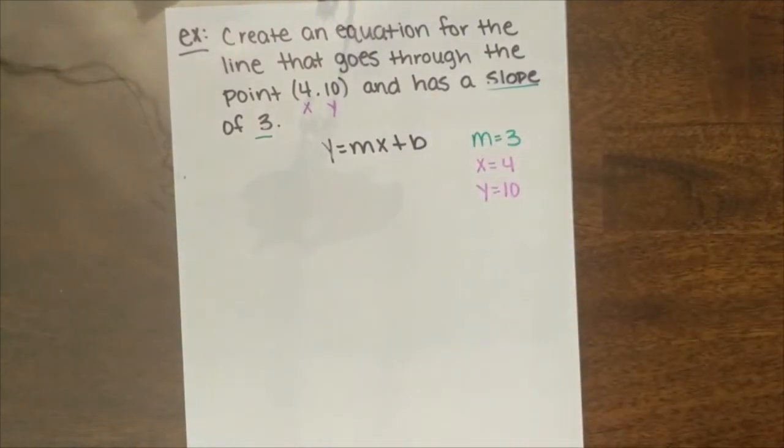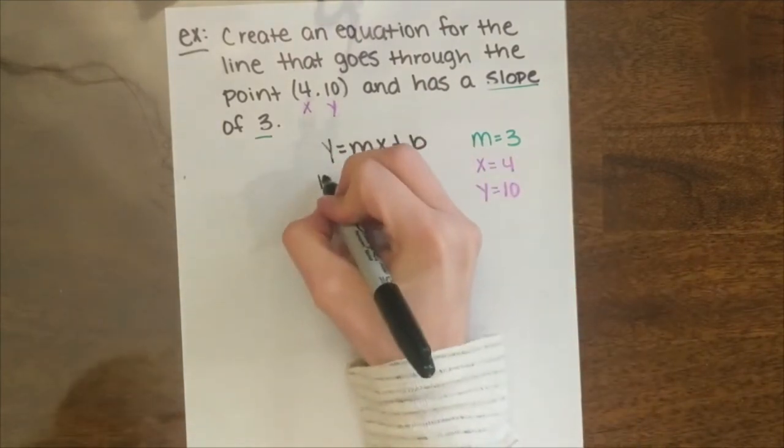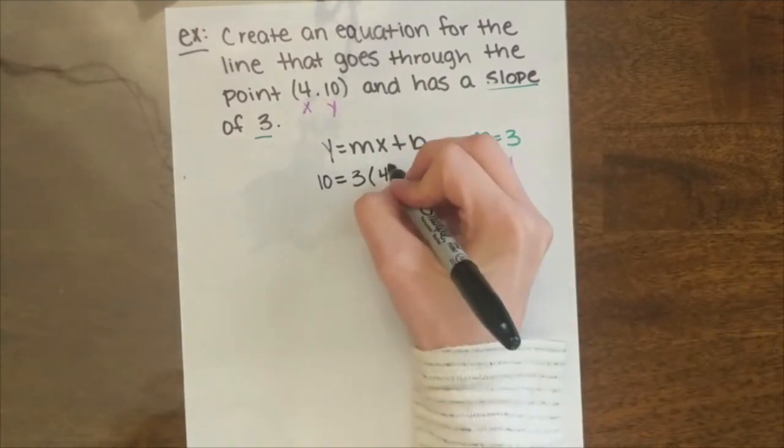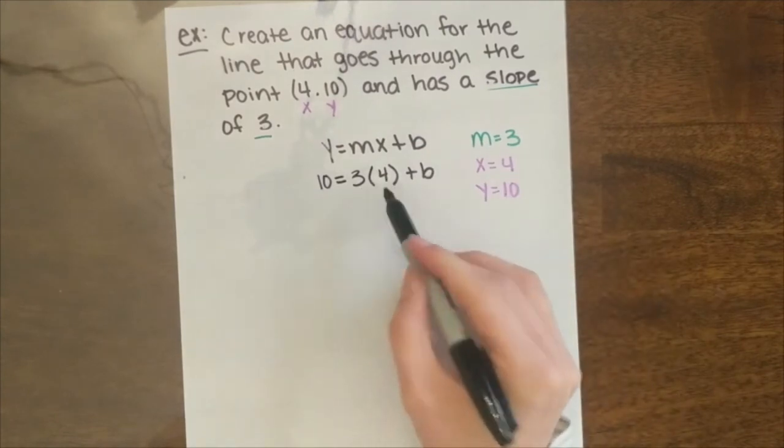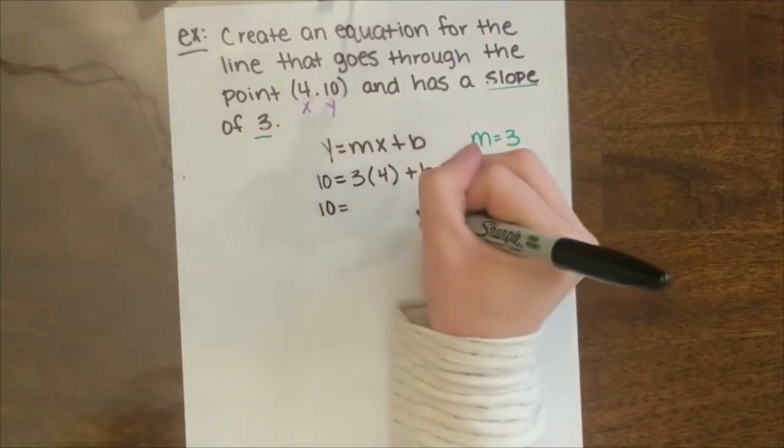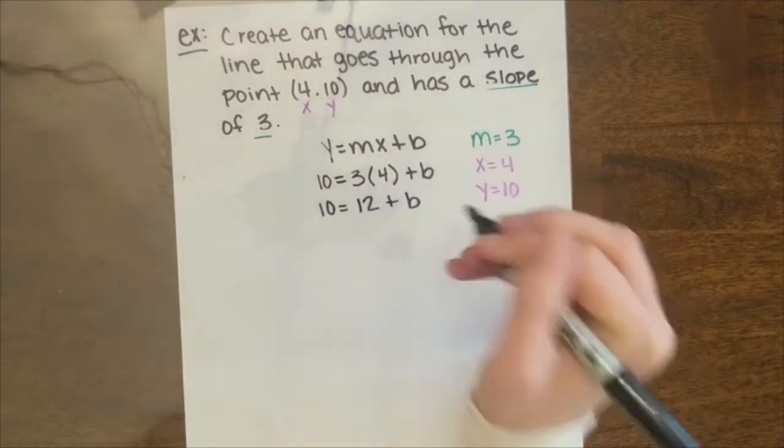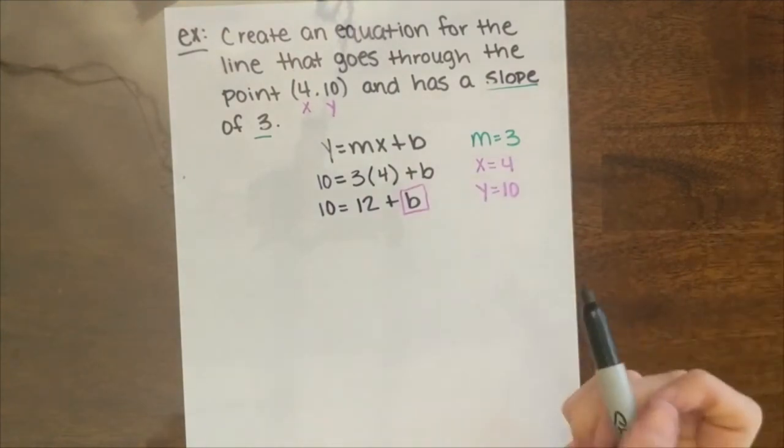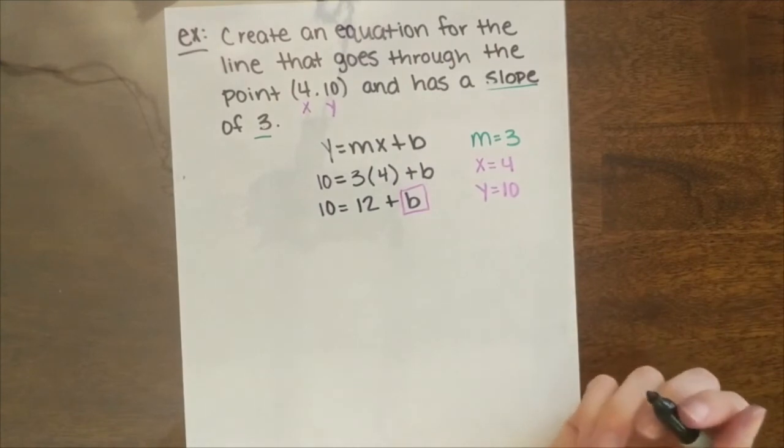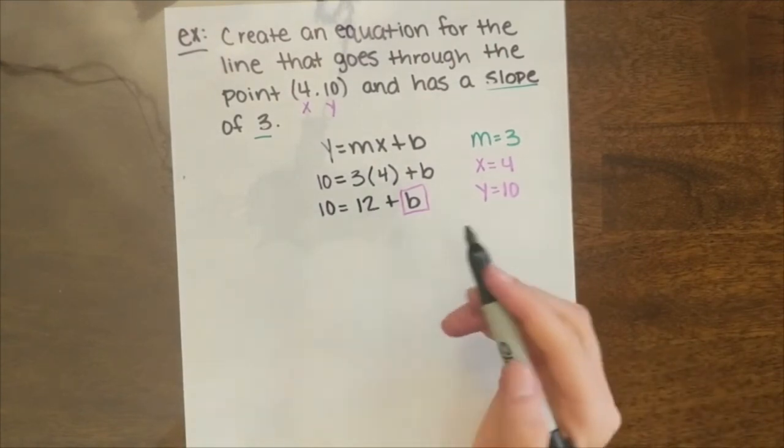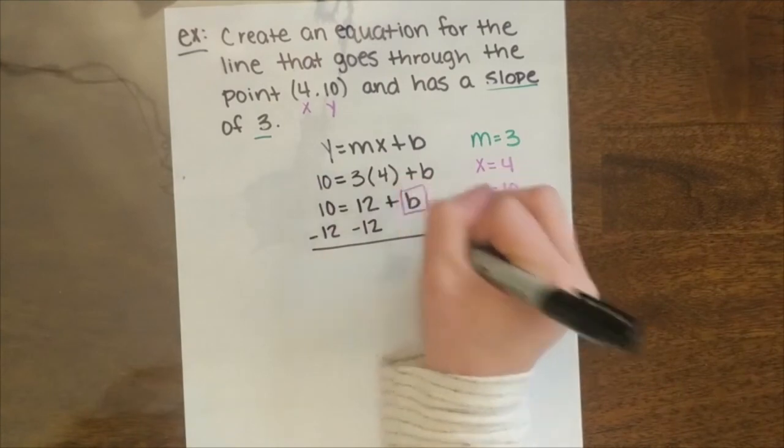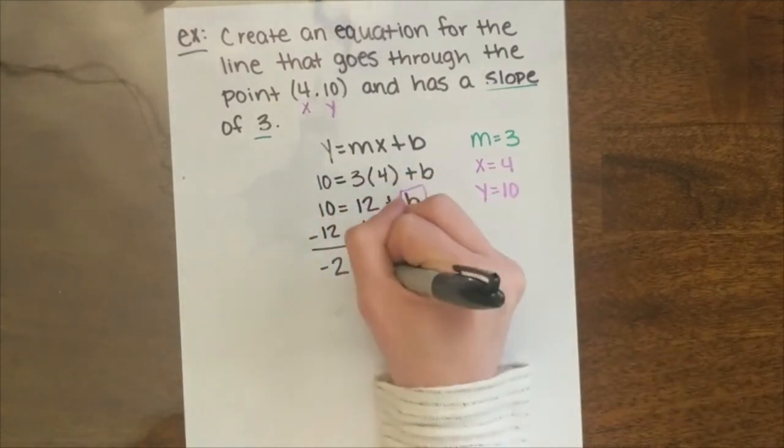We're going to substitute what we know into our equation and solve for our missing y-intercept. So we have a y of 10. So y equals 10 equals m is 3 times your x value, which is 4, plus b. 3 times 4 is 12, so we get 10 equals 12 plus b. Our goal is to isolate the variable b, so we're going to move all of our terms away from it. To cross the equals sign, we have to use the opposite operation. So we have a positive 12, and the additive inverse of that is negative 12. So we're going to subtract 12 from both sides. 10 minus 12 is negative 2 equals b.